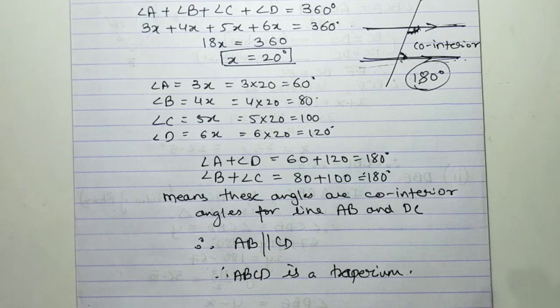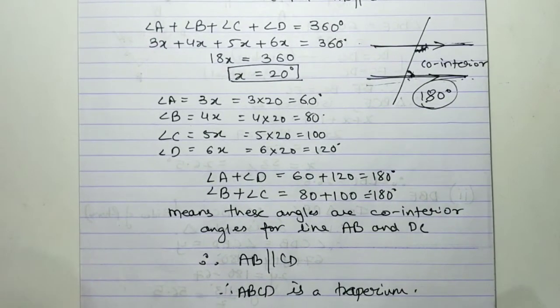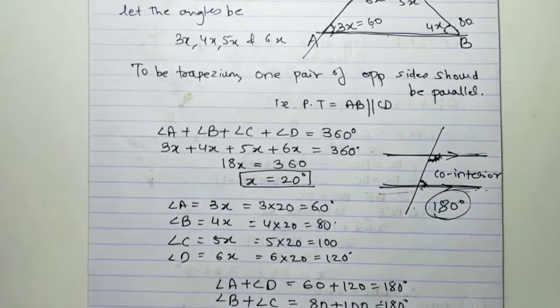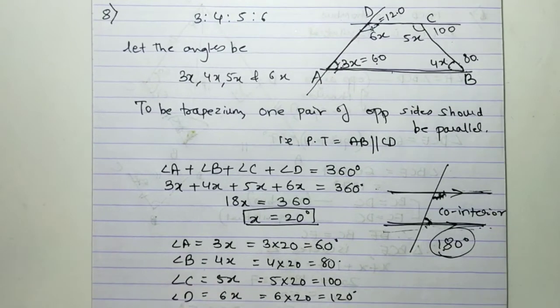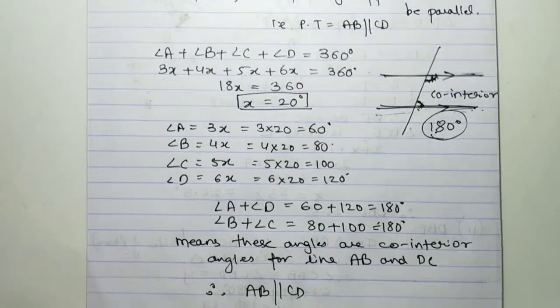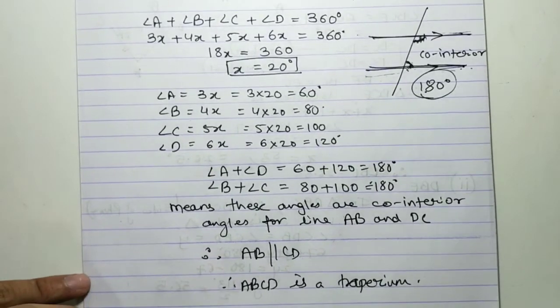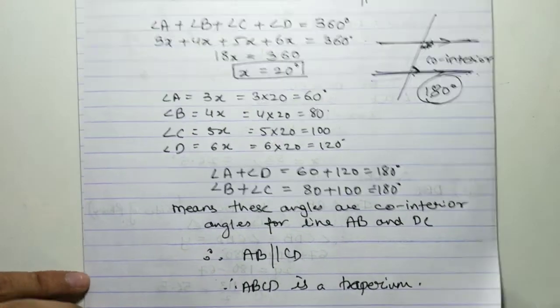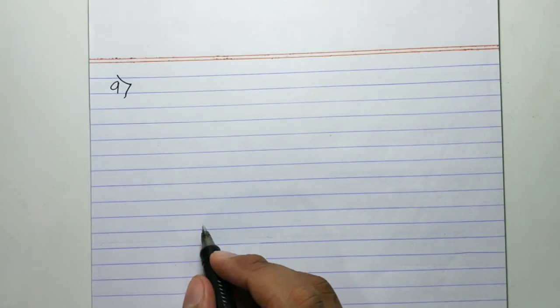Therefore, ABCD is a trapezium. Copy each and every statement. Moving on to the ninth question.